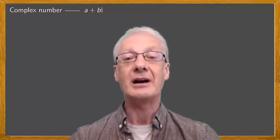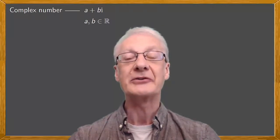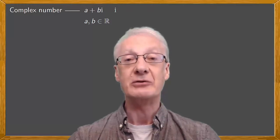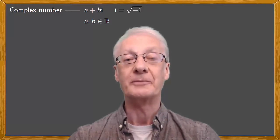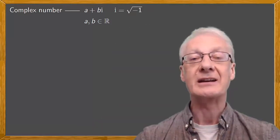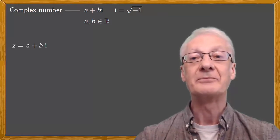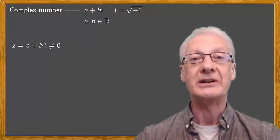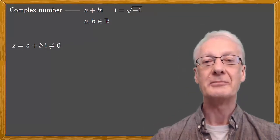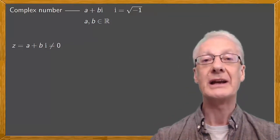Complex numbers are expressions of the form a plus bi where a and b are real numbers and i is the imaginary unit, the square root of minus 1. What we need to understand is how a complex number z equal to a plus bi has certain geometric properties. A complex number corresponds to a point in the plane ab.